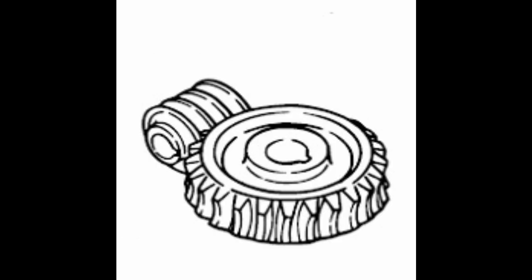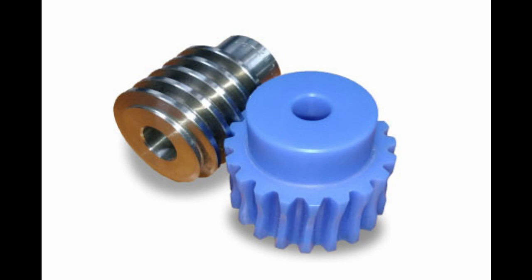A screw-shaped cut on a shaft is the worm; the mating gear is the worm wheel, and together on non-intersecting shafts they are called the worm gear. Worms and worm wheels are not limited to cylindrical shapes — there is the hourglass type which can increase the contact ratio, but production becomes more difficult. Due to the sliding contact of the gear surfaces, it is necessary to reduce friction. Generally a hard material is used for the worm and a soft material for the worm wheel. Even though efficiency is low, the rotation is smooth and quiet. When the lead angle of the worm is small, it creates a self-locking feature.